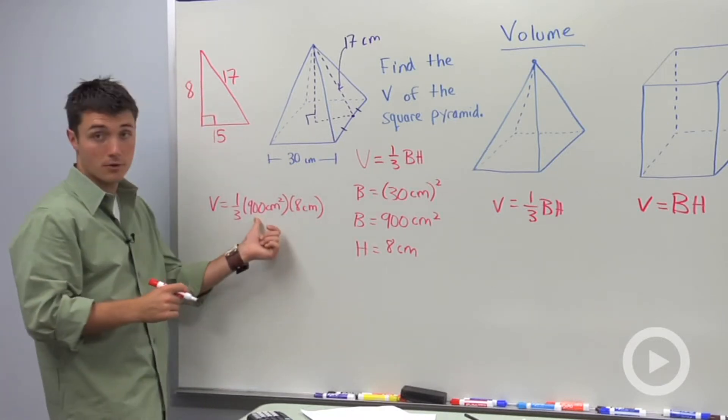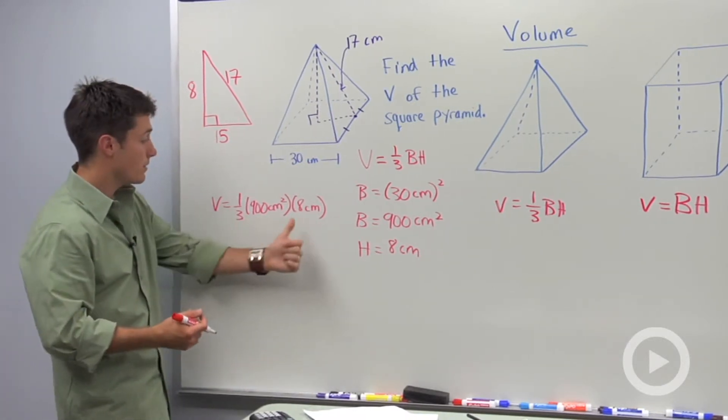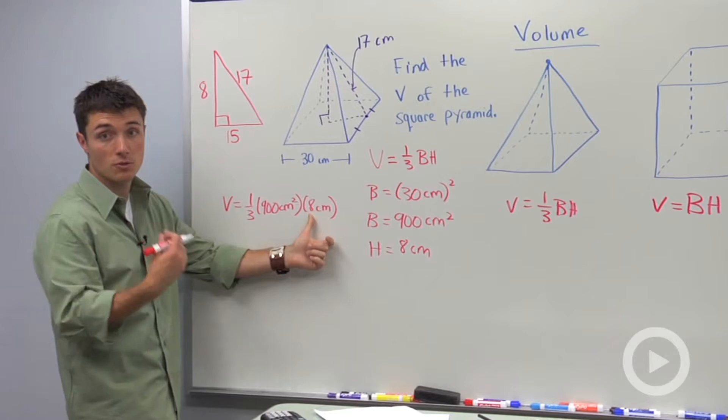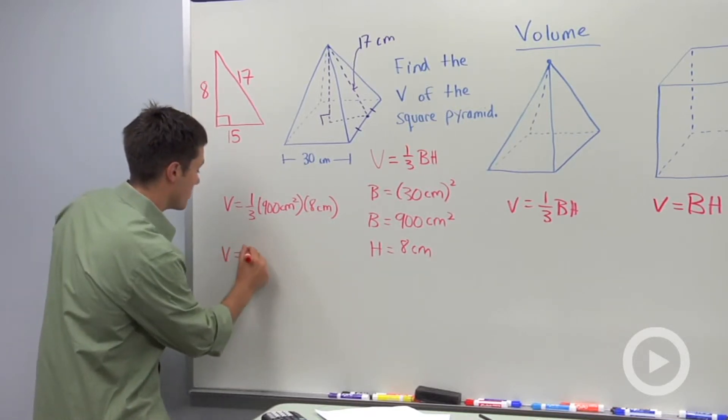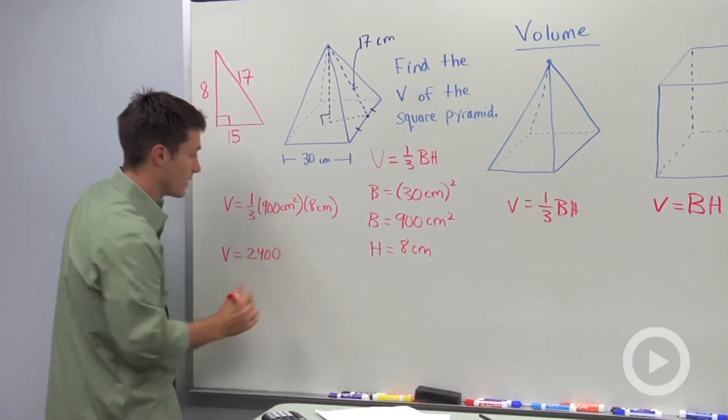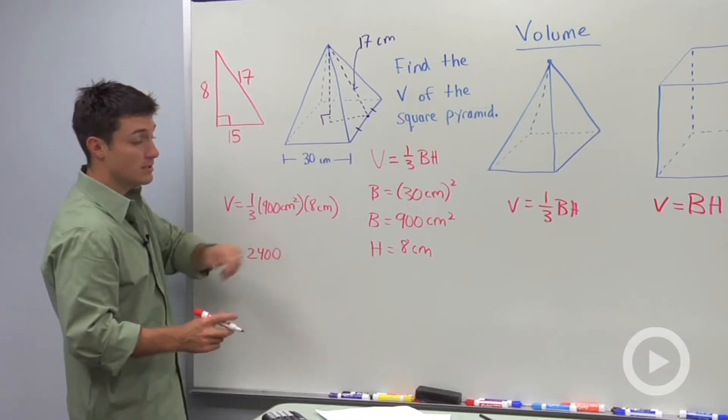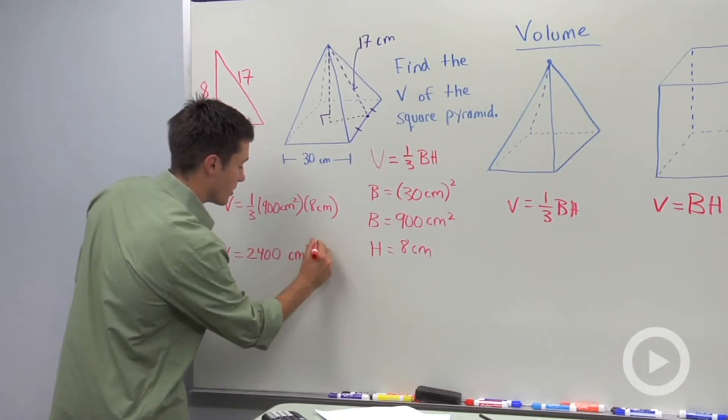So a third of 900 would be 300. 300 times 8 would be 2,400. So volume is equal to 2,400. We have centimeters squared times centimeters, so that's going to be cubic centimeters.